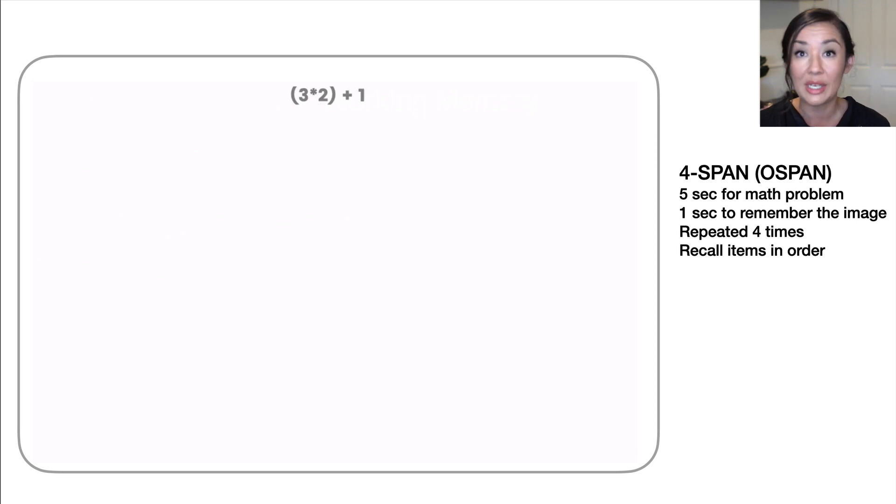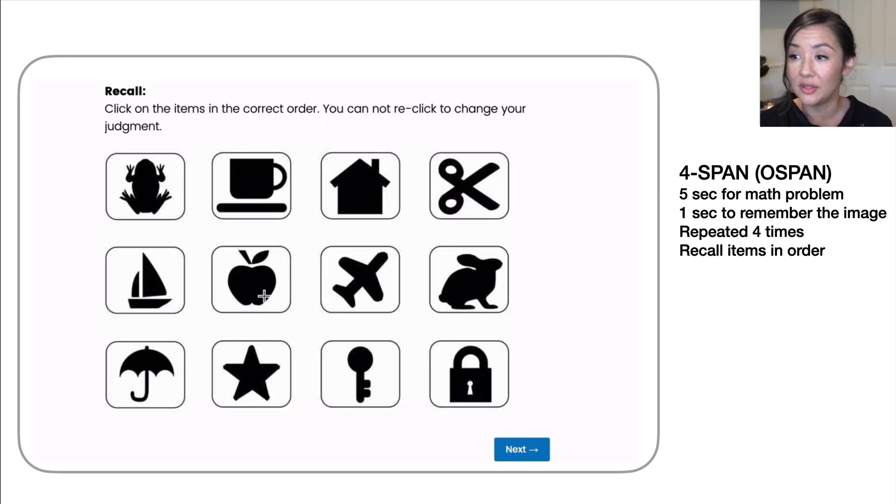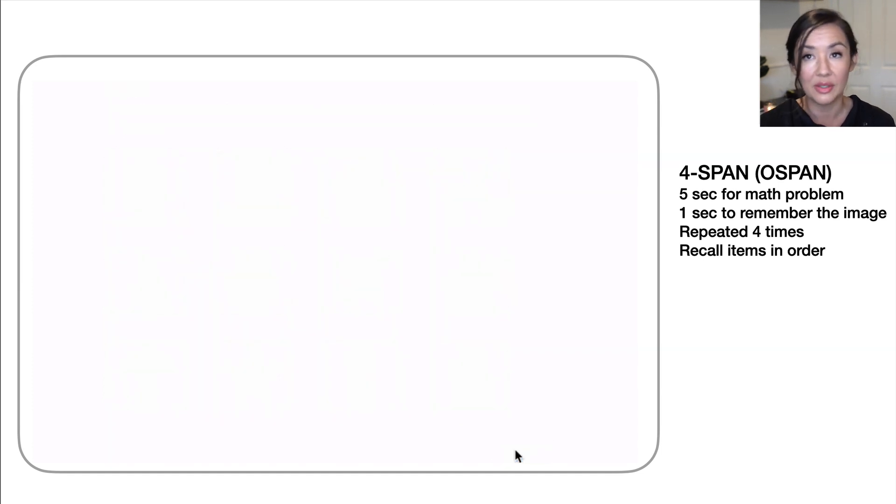Let's take a look at one of these working memory measures. This is called an O-span task. And what it does is it measures how much information you can store in your mind and hold there. In this version, participants see a math problem for five seconds that they have to solve, and then they see an image that they have to remember. They see a sequence of math problems and images, and they have to remember the order that the images appear to them. They're presented with this math problem for five seconds, then they answer a true-false question, then they remember an object. At the end, they see an array and they have to click on the items in the correct order that they viewed them. People will see a four-span because there are four items, then a five-span and then a six-span. So we can get a coarse measurement of how much information they can store in their mind.